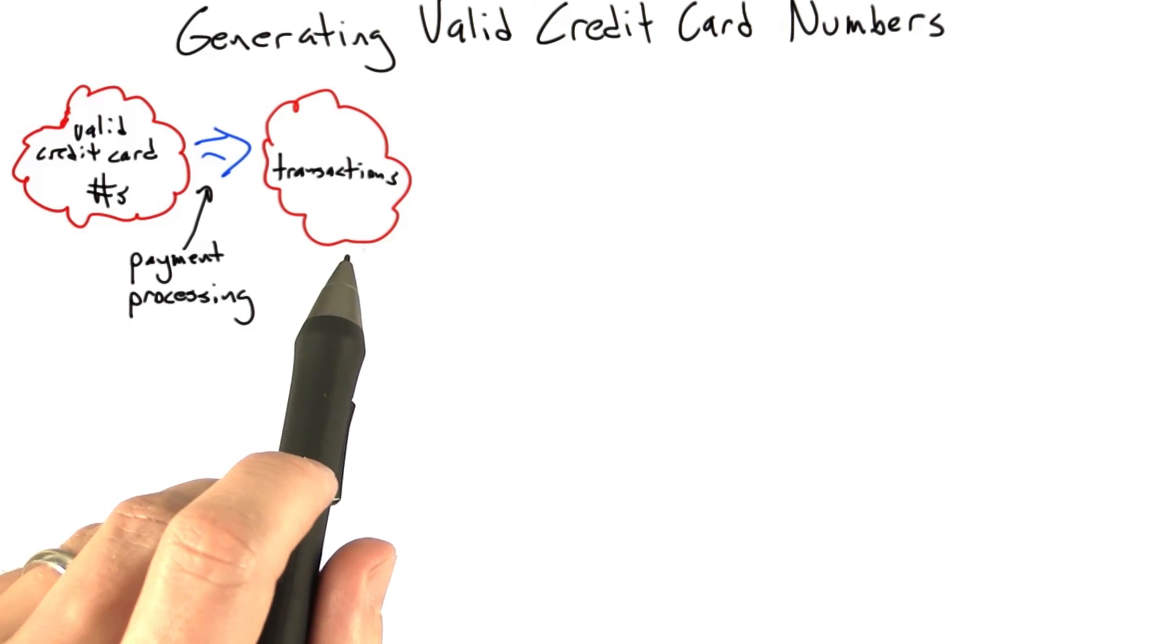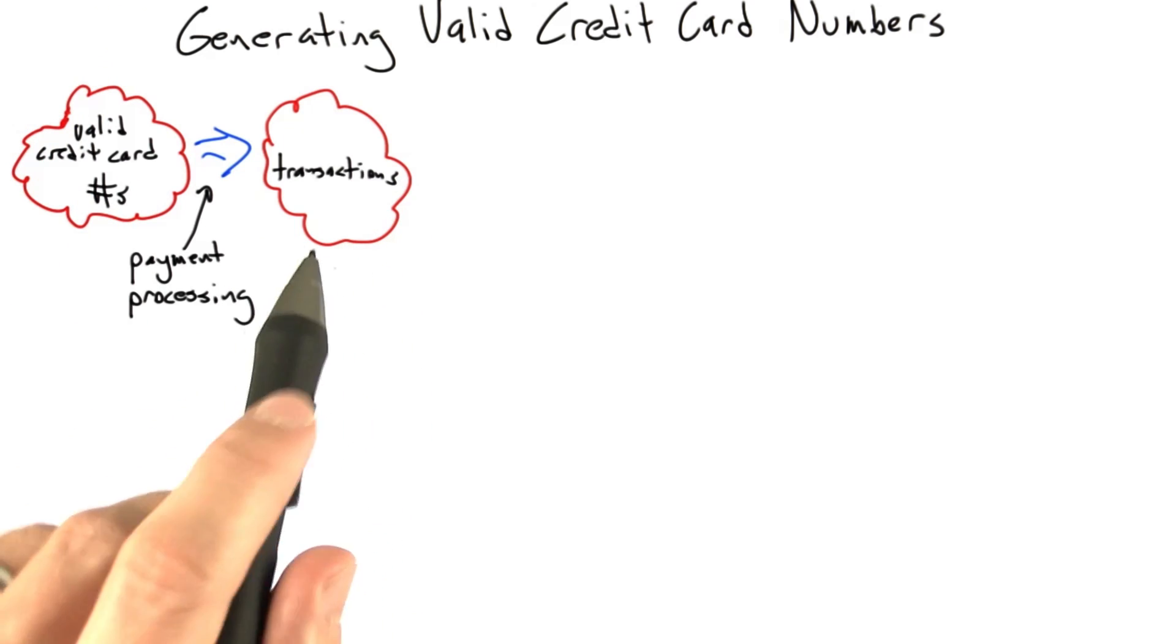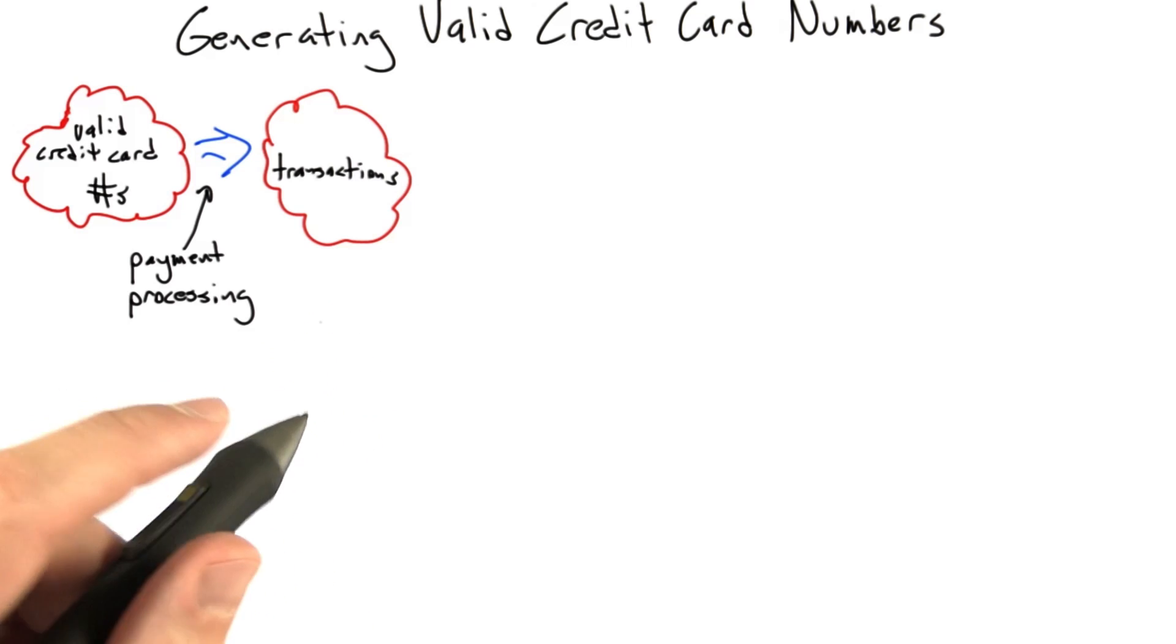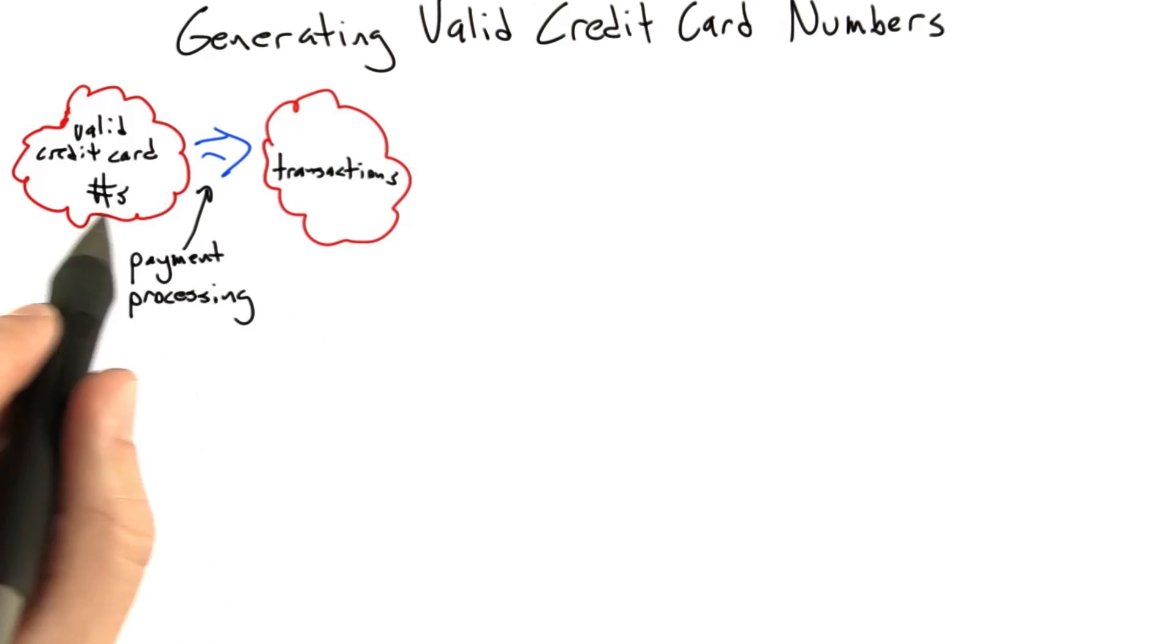So now, how are you going to test this? Well, one thing you're going to do is collect some credit cards that you have and that your friends have, so you'll have a variety of MasterCard and American Express and other kinds of credit cards. You're going to run it through your payment processing system and you're going to see if it works. After you finish doing that, the question you have to ask is, have you shaken all the bugs out of your code? And the answer is probably not.